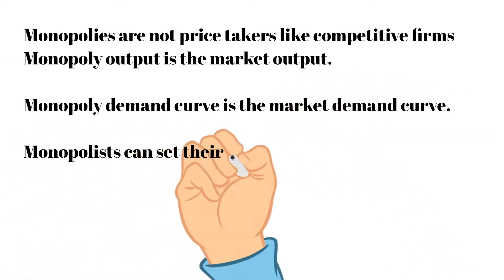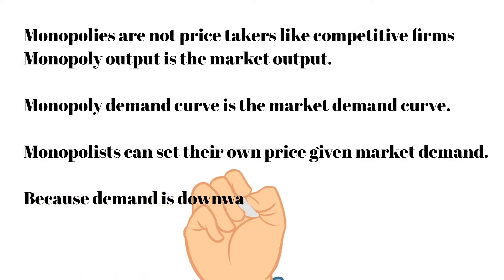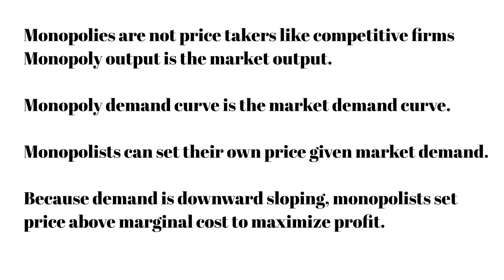A monopoly's output is the market output, and the demand curve a monopoly faces is the market demand curve. Because the market demand curve is downward sloping, the monopoly doesn't lose all its sales if it raises its price, unlike a competitive firm. Consequently, the monopoly sets its price above marginal cost to maximize its profit.